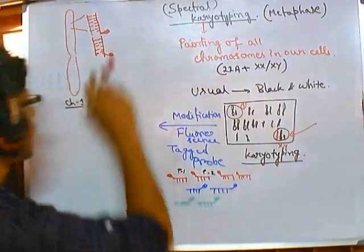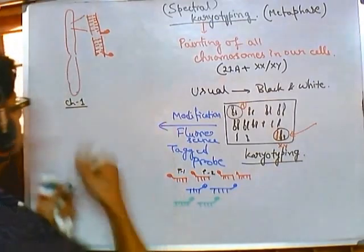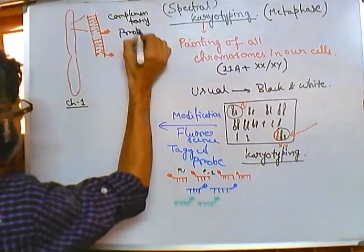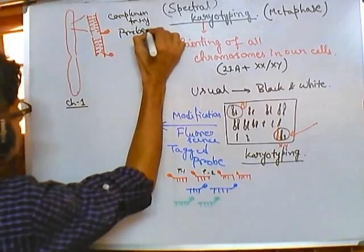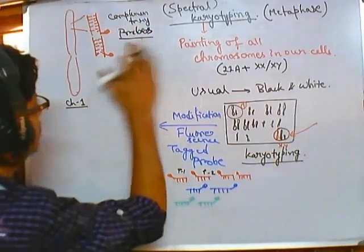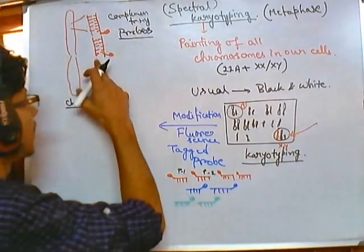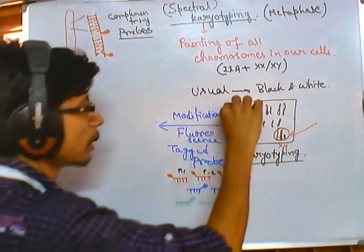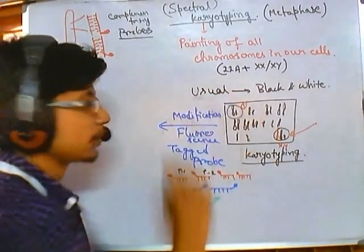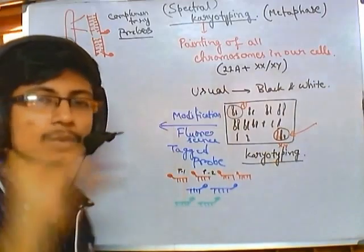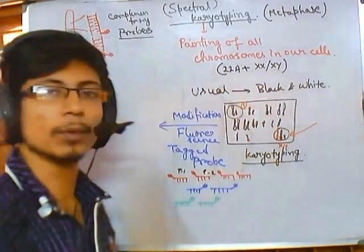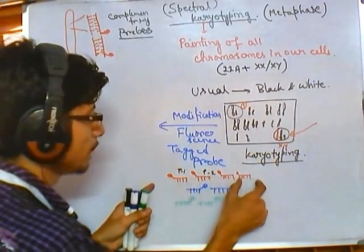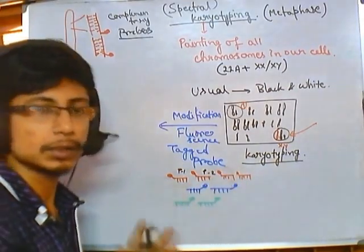The designing of probes is really important, and for that we must know the sequence of all the chromosomes and all the DNA or genes present inside our cells. We produce complementary probes. Now suppose we want the whole chromosome one to be stained red — we will make all the complementary probes and tag them with red fluorescence, ensuring that whenever we look through the fluorescence microscope and see the color red, we are seeing chromosome number one.